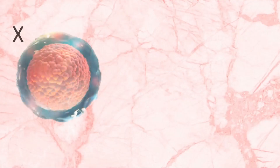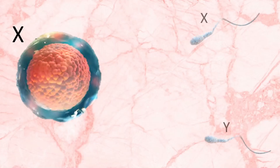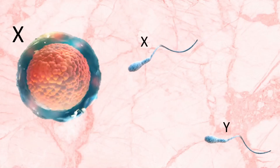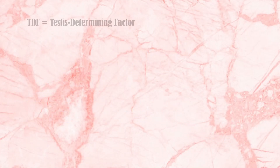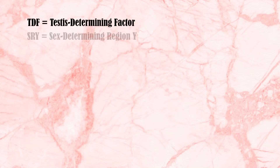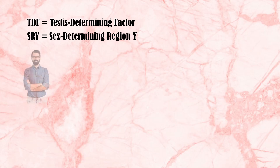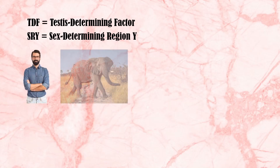In humans, the sex of a baby is determined by the inheritance of an X chromosome from the mother and either an X or Y chromosome from the father. The testis determining factor, or sex determining region Y, is responsible for the initiation of male sex determination in humans, placental mammals and marsupials.